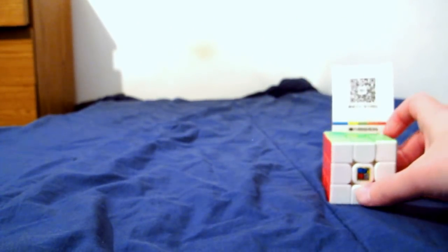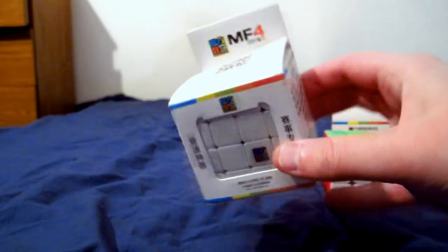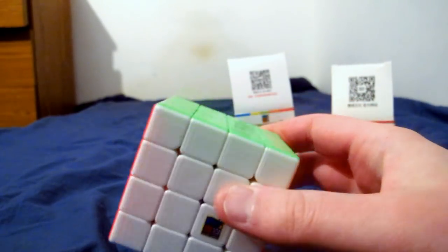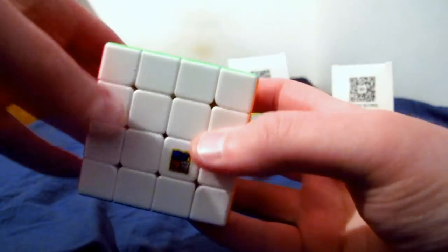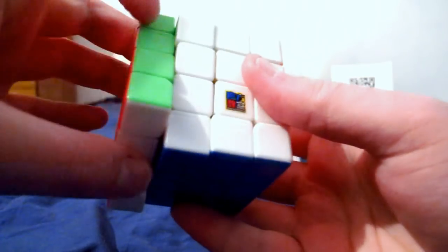I also got the MF4. It's a cheap line of cubes that perform really well basically. The MF4 is a 4x4, so 3x3 by 3, 4x4 by 4. It also works quite well. I lubed and tensioned that.